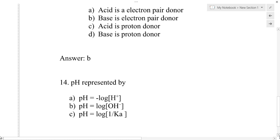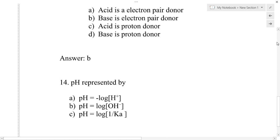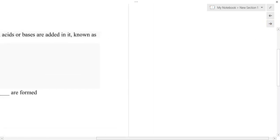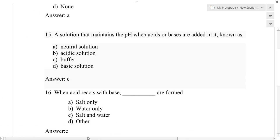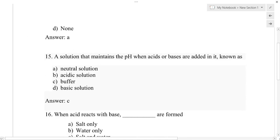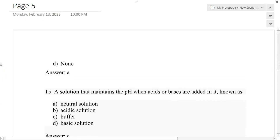Question number 14: pH is represented by — option A: pH = −log[H⁺], option B: pH = log[H⁻], option C: pH = log(1/K), option D: none. The correct answer is option A: pH = −log[H⁺].